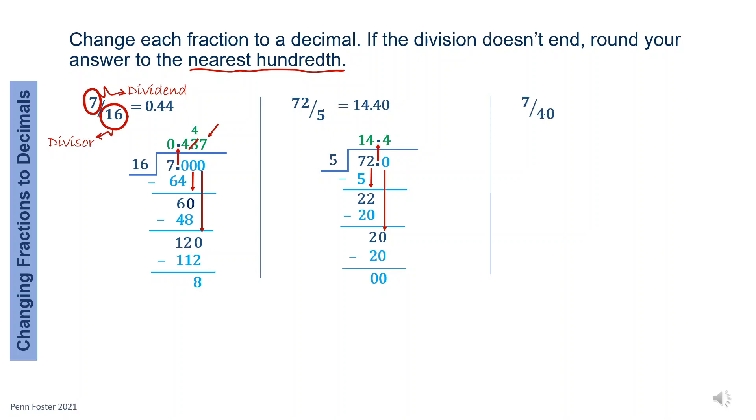Last fraction. 7 over 40. Set up the problem. 7 over 40 doesn't work. Write a decimal point and bring in a 0. 70 over 40 is 1. 1 times 40 is 40. 70 minus 40 is 30. Bring in a 0. 300 over 40 is 7. 7 times 40 is 280. Subtract. It's 20. Bring in another 0. 200 over 40 is 5. 5 times 40 is 200. Subtract. The division ends here. Look at the quotient. 7 is followed by a 5. Then 7 is turned into an 8. 7 over 40 is approximately 0.18.